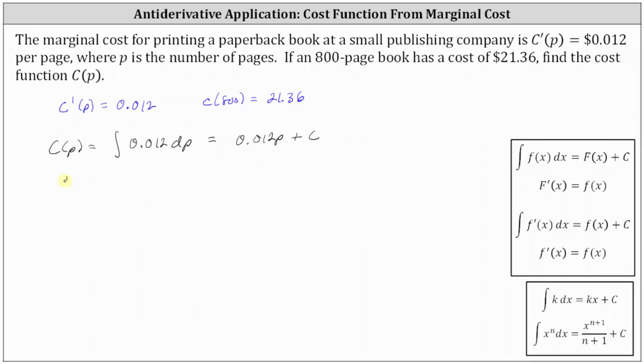Now we know the cost function C(P) equals the family of functions 0.012P + C. We can determine the exact cost function because we know C(800) = 21.36.